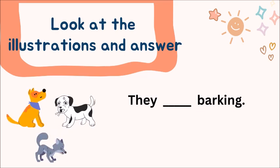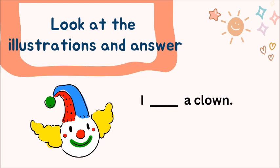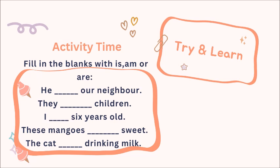Let's go to the next one. I ___ a clown. The answer is: I am a clown. Here are a few more sentences. You can try on your own. You have to fill in the blanks with is, am, or are.